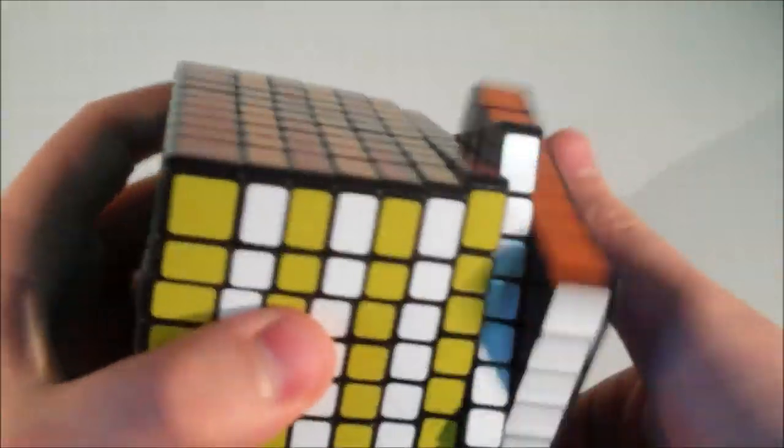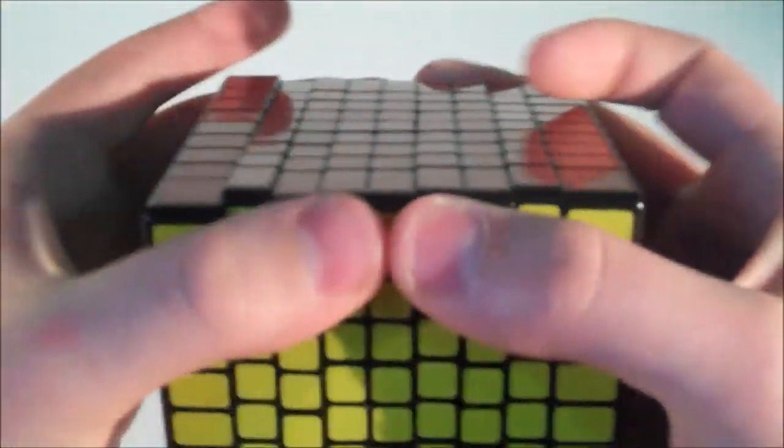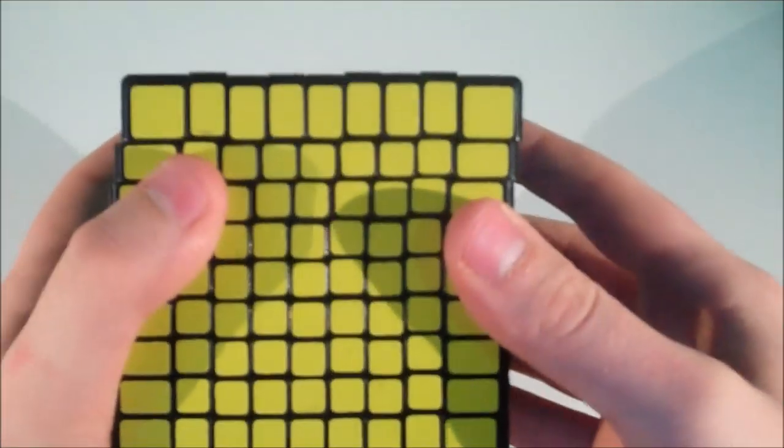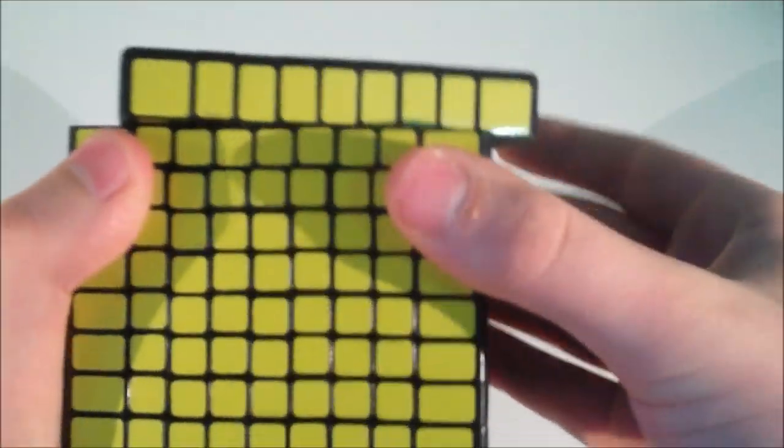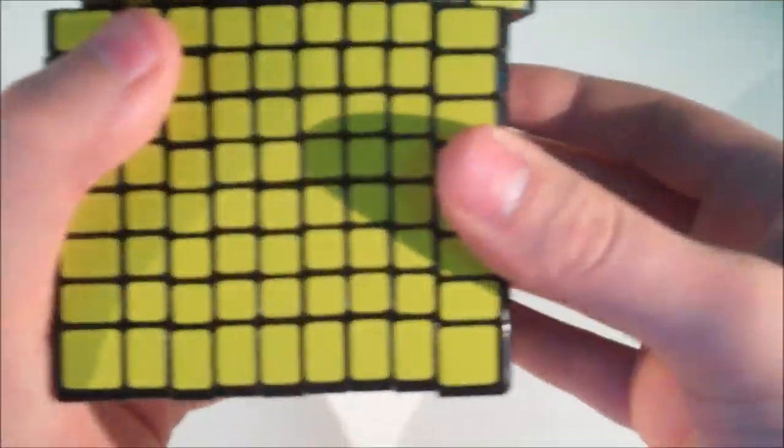It's a very nice cube and it's just really nice to solve. So onto the corner cutting, the outer layers can cut a whole cubie, which you know is just amazing because of the size of the puzzle. It's just really good that it can cut so far.